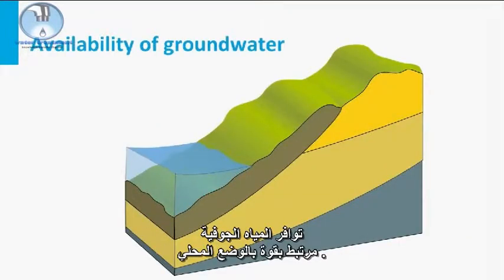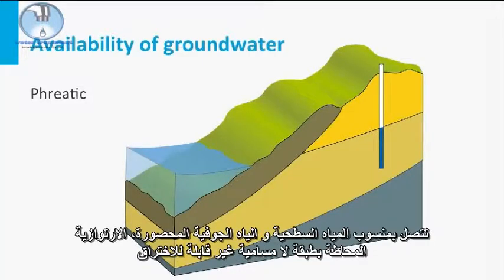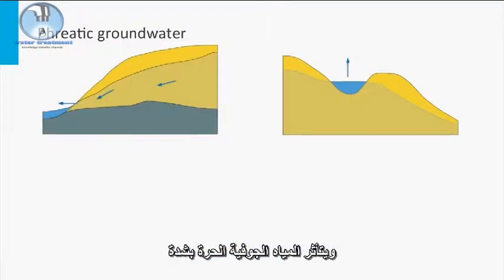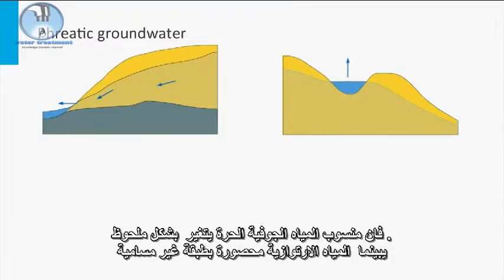The availability of groundwater is strongly tied to the local situation. An important division can be made between the abstraction of phreatic groundwater, which has a free water table, and confined artesian groundwater, which is enclosed by a non-permeable layer. Phreatic groundwater is strongly influenced by inflows and outflows such as rainfall, so even without human interference the groundwater table will fluctuate significantly.